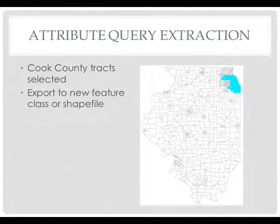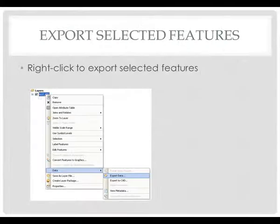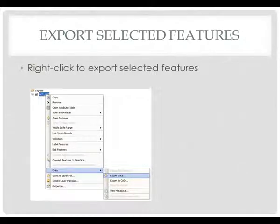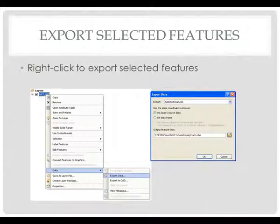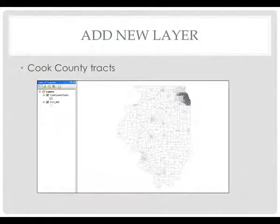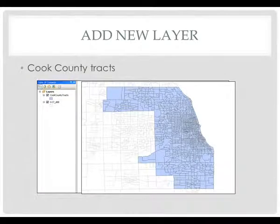You can then export that new feature to a new feature class or a shapefile, and as a result you're able to just deal with the county tracks you want in that case study without worrying about the rest of the state. You export the selected features by right-clicking, going to Data and Export Data, which lets you create an output feature class or shapefile. Another option is to use Selection and make a layer from the selected feature, but keep in mind that does not create an exported dataset that stands on its own. You then add your new layer showing your Cook County census tracks.